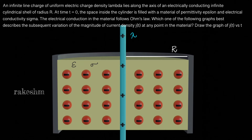What will happen is: this is a positive line charge, so the electrons in the material will start getting attracted to this line charge. As these electrons get attracted, a positive charge will form on the outer surface of the shell. What is being asked is: as electrons are moving inside the material, how does the current density in the material vary with time?